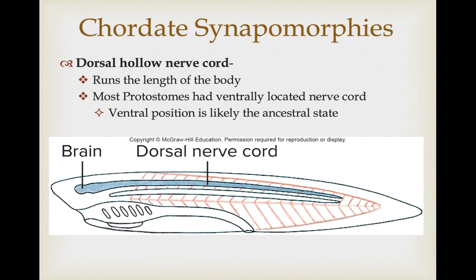All of these lineages also show, at some point, a dorsal hollow nerve cord that runs the length of the body. In contrast with organisms we talked about previously, most protostomes had a ventrally located nerve cord. The ventral position is likely the ancestral state, and we see a transition in the chordates to this dorsal position.